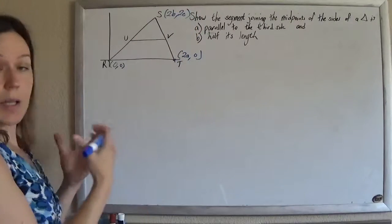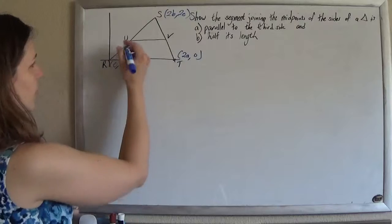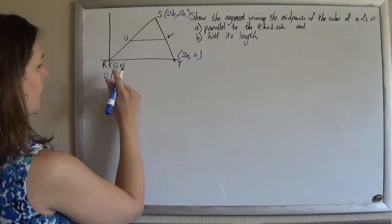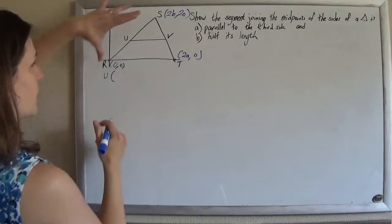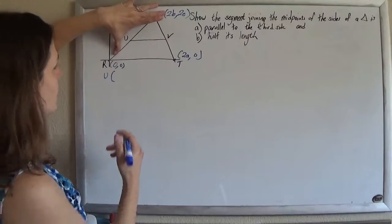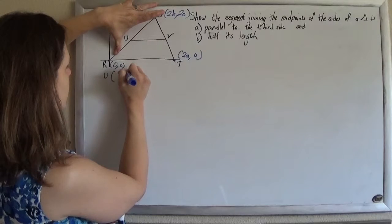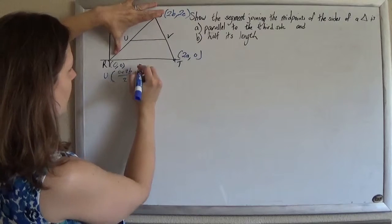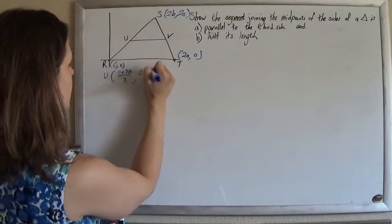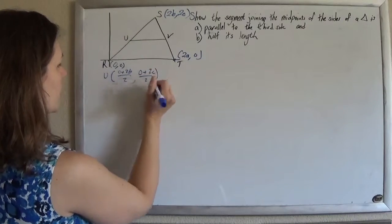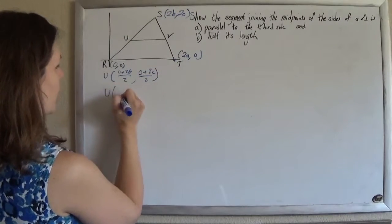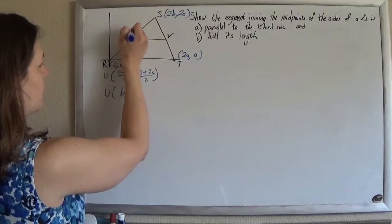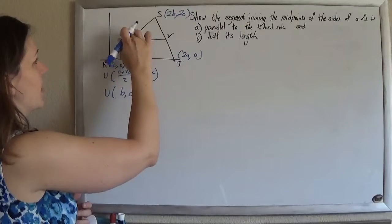And so if I label those like that, then I could find the midpoints. So I know that u is going to be the midpoint. So the midpoint is just the average. You average the x's, so 0 plus 2b divided by 2. And average the y's, 0 plus 2c divided by 2. So that means that u is at the point b, c. So no fractions, that's nice.